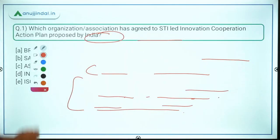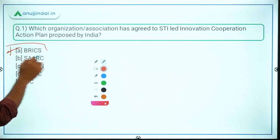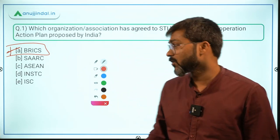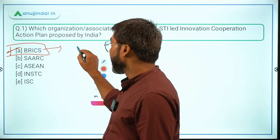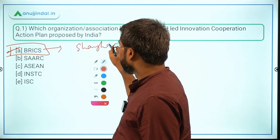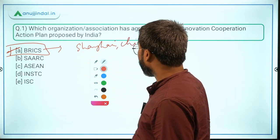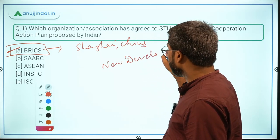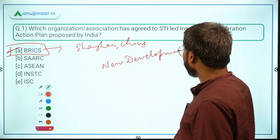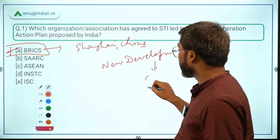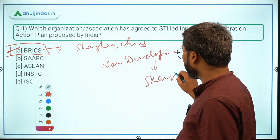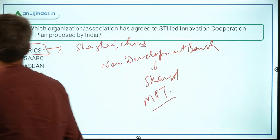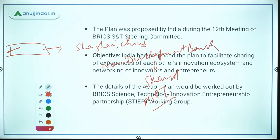Coming back to the question, Option A — BRICS — is the correct answer. BRICS stands for Brazil, Russia, India, China, and South Africa. Its headquarter is in Shanghai. BRICS also has a bank known as the New Development Bank (NDB), which is also headquartered in Shanghai. The president of NDB is Marcos Prado Troyjo from Brazil.